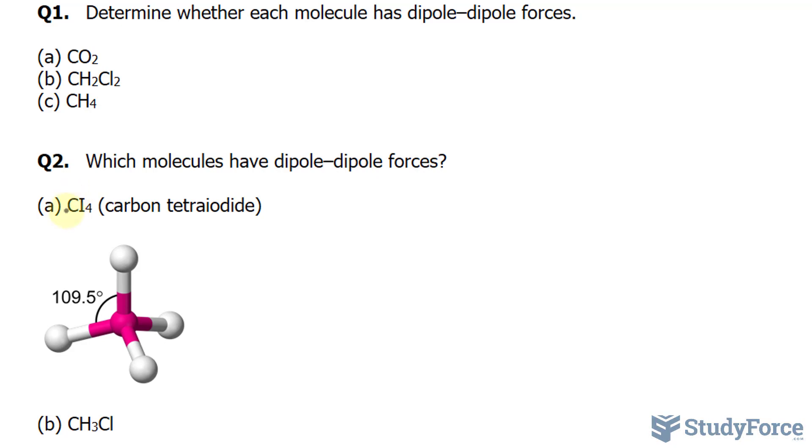Carbon is much less electronegative than iodine, so the iodine pulls those electrons around carbon towards it. There are polar forces.